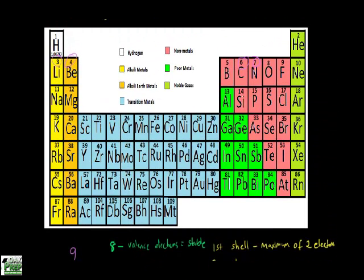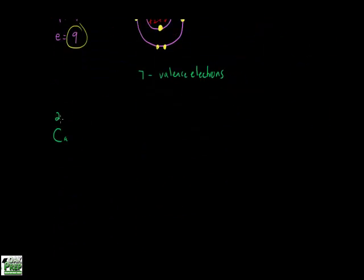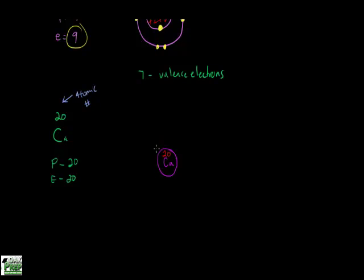Let's do another example — this time calcium. Calcium has an atomic number of 20, so we write that down. The atomic number equals the number of protons, so protons equals 20, and electrons also equals 20. Let's draw the structure again: here's our nucleus with calcium inside, and 20 protons inside.